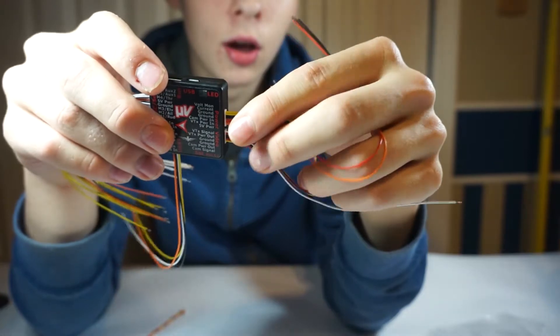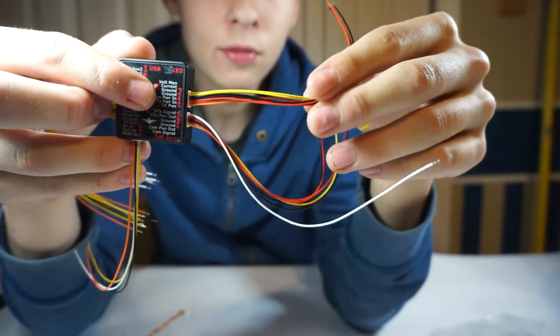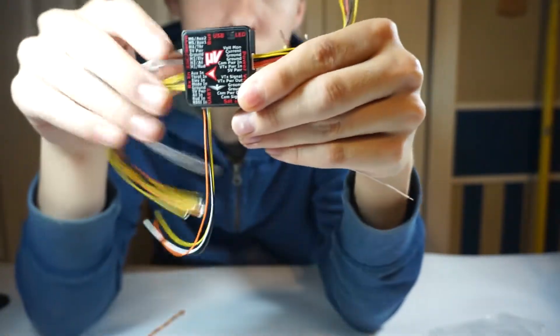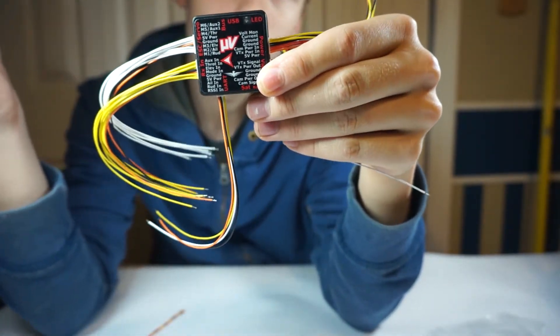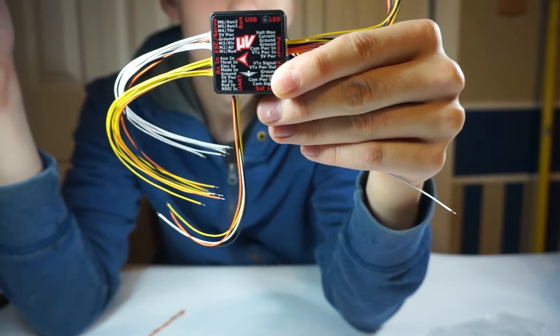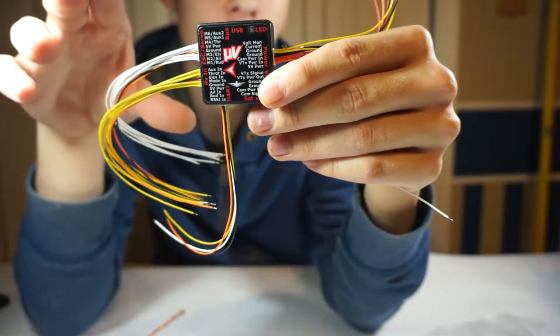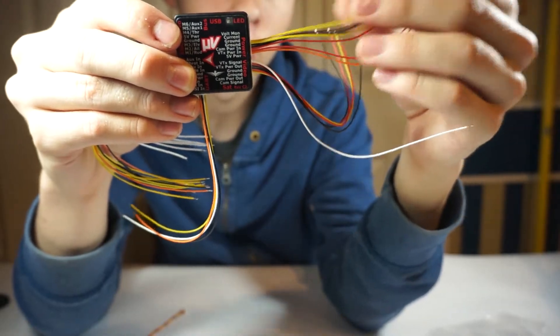You can put your 12 volt power directly into the vector for the video and camera. If you do this you have the option to program a switch on your controller to turn off and on the video transmitter, which is extremely useful at a race where you don't want to power up your video but you want to plug your quad in. Very nice feature. But you have to wire in your 12 volt power.